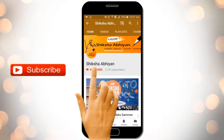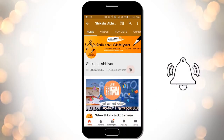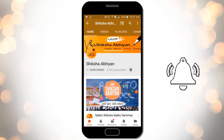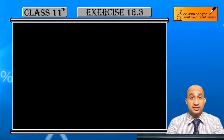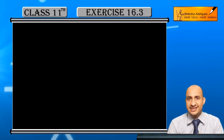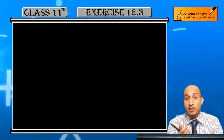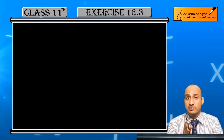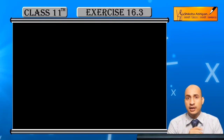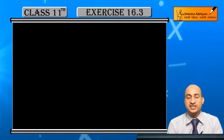Subscribe to our channel by clicking the subscribe button, click the bell button and enjoy the latest uploads. Now students, we will start the third and last exercise of the chapter. In this exercise we will find some events and experiments in this probability chapter, and we will start with the first question.